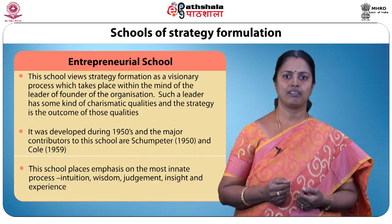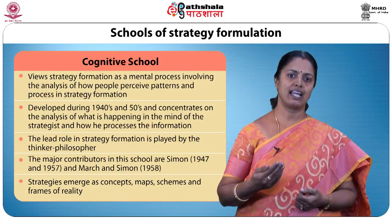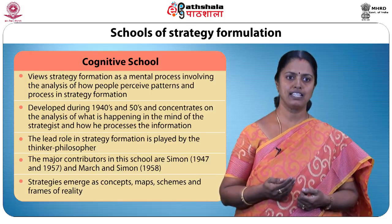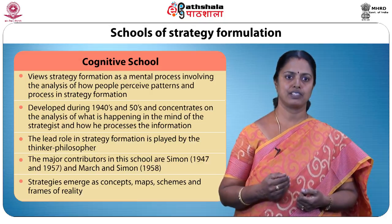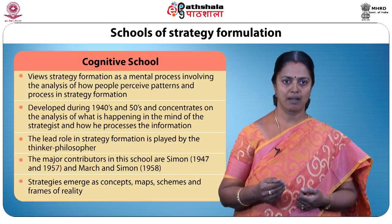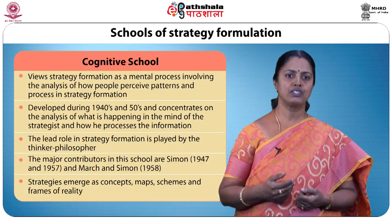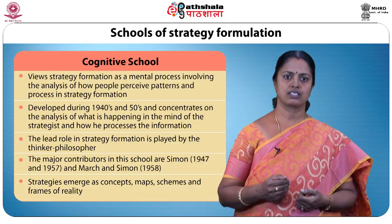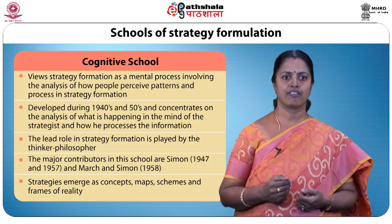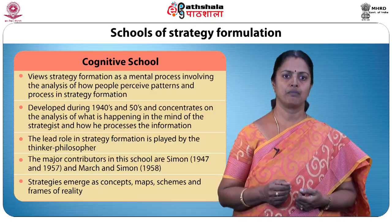The cognitive school views strategy formation as a mental process involving the analysis of how people perceive patterns and processes in strategy formation. Developed during the 1940s and 50s, it concentrates on analyzing what is happening in the mindset of the strategist and how they process information. Major contributors are Simon and March. Strategies emerge as concepts, maps, schemes, and frames of reality, pointing to the creative side of strategy formation.